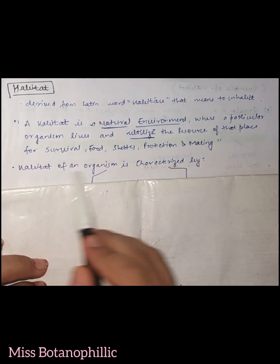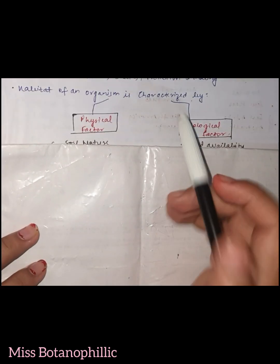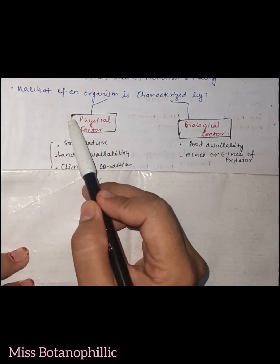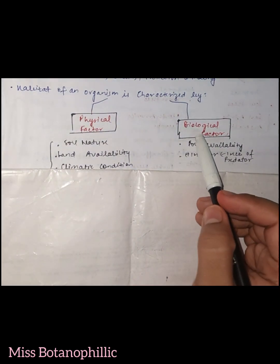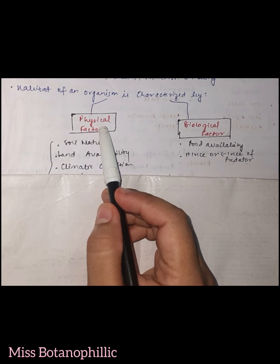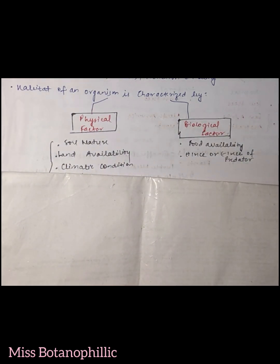for protection and mating. Habitat of an organism is characterized by two factors - the first factor is physical factor and the second is biological factor, which you can also call biotic and abiotic. So physical factors are also called abiotic factors and biological factors are also called biotic factors.